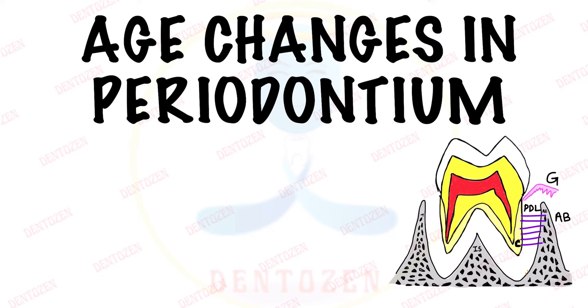Hi everyone, welcome to 10 to 10. Today we are going to talk about age changes in periodontium. Perio means around, donchium means tooth — the structures which surround the tooth. These are cementum, periodontal ligament, alveolar bone and gingiva.